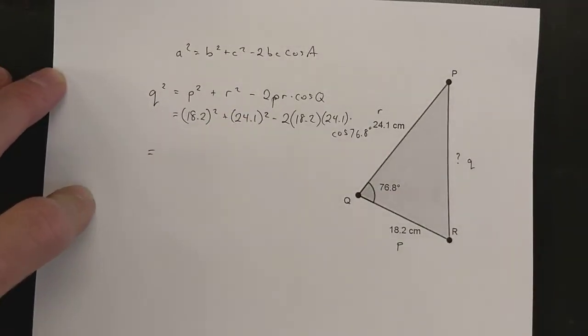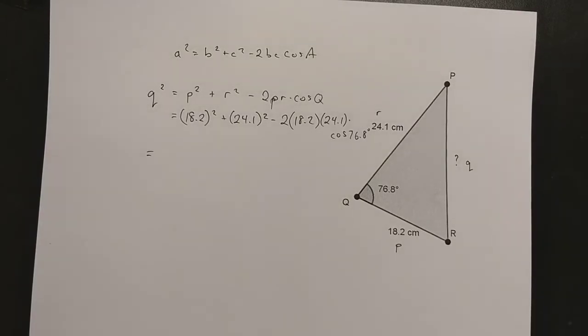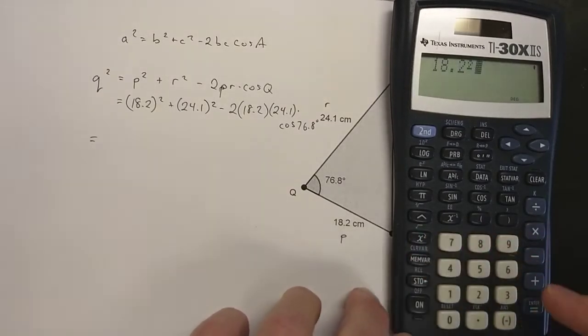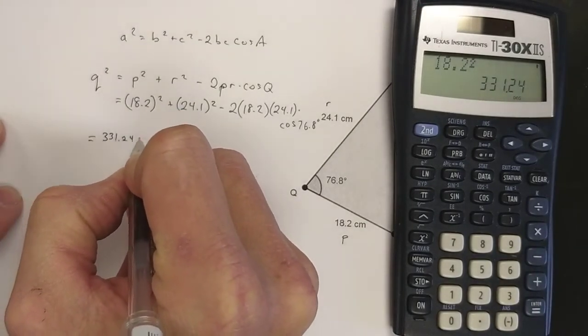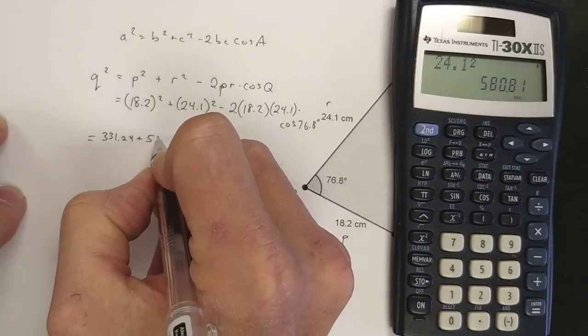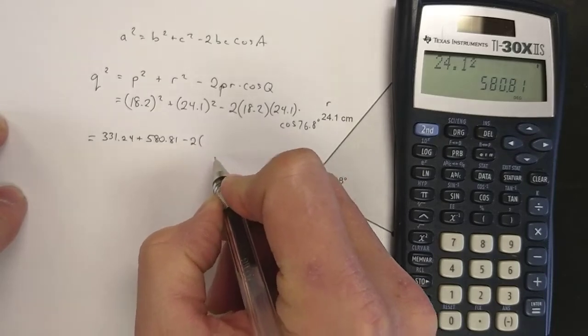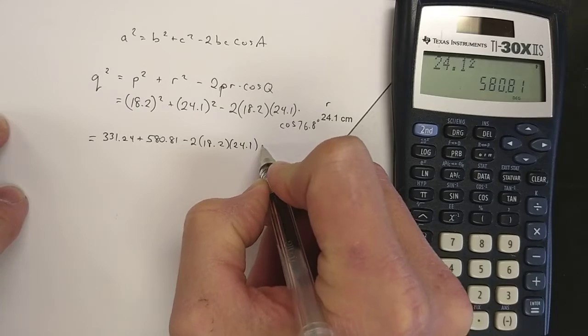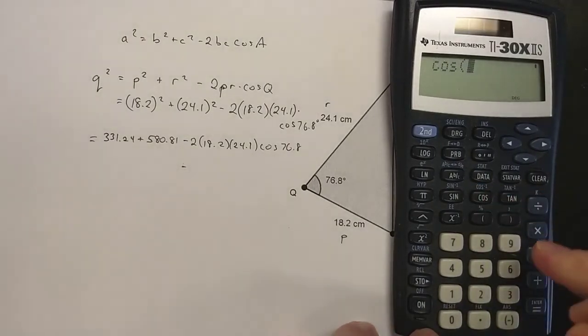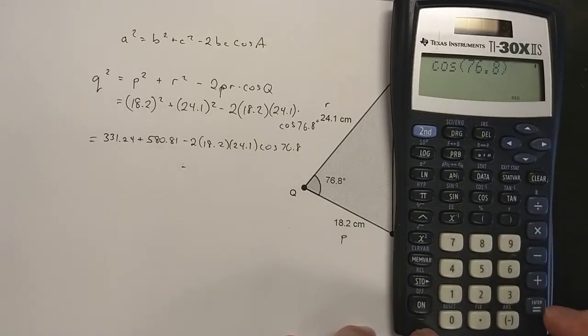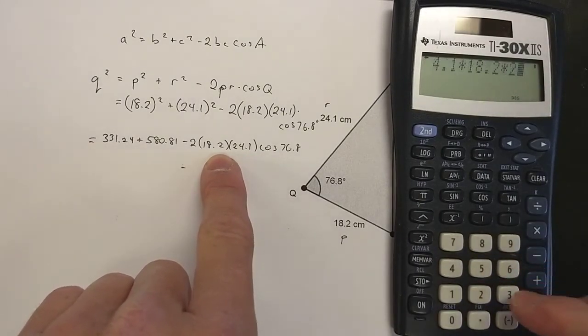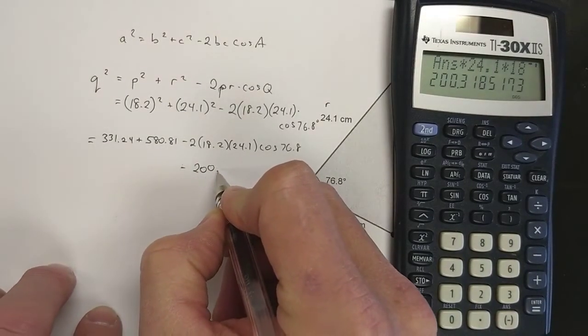Depending on how good your calculator is or how good you are with your calculator, you can do that in one step or many steps. I can just find out what 18.2 squared is. That's 331.24, 24.1 squared is 580.81, and minus 2 times 18.2 times 24.1 times the cos of 76.8. Let's see, this whole last thing works out to 200.32 approximately.